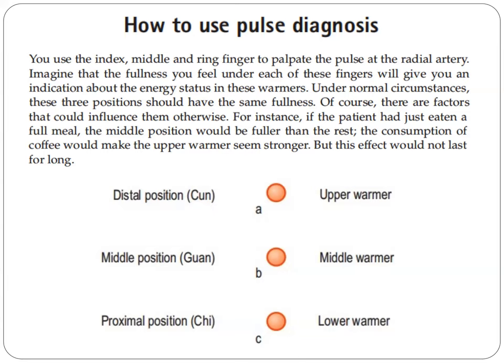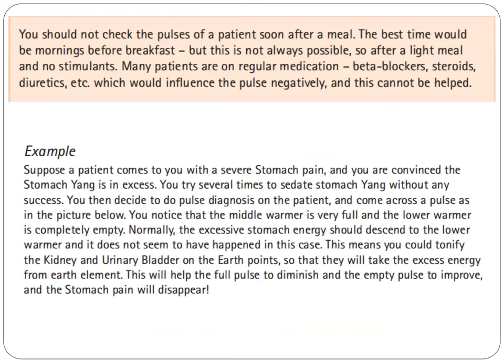There are factors that could influence them otherwise. For instance, if the patient had just eaten a full meal, the middle position would be fuller than the rest. The consumption of coffee would make the upper warmer seem stronger, but this effect would not last for long. You should not check the pulses of a patient soon after a meal. The best time would be mornings before breakfast, so after a light meal and no stimulants.